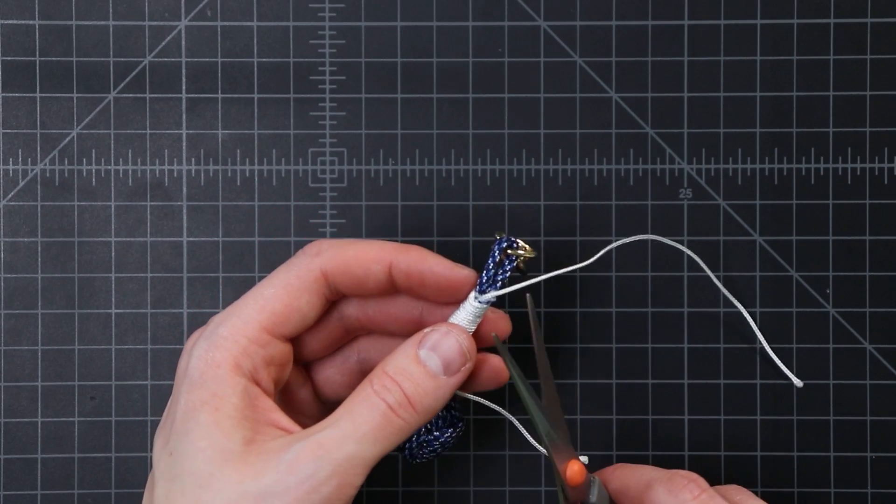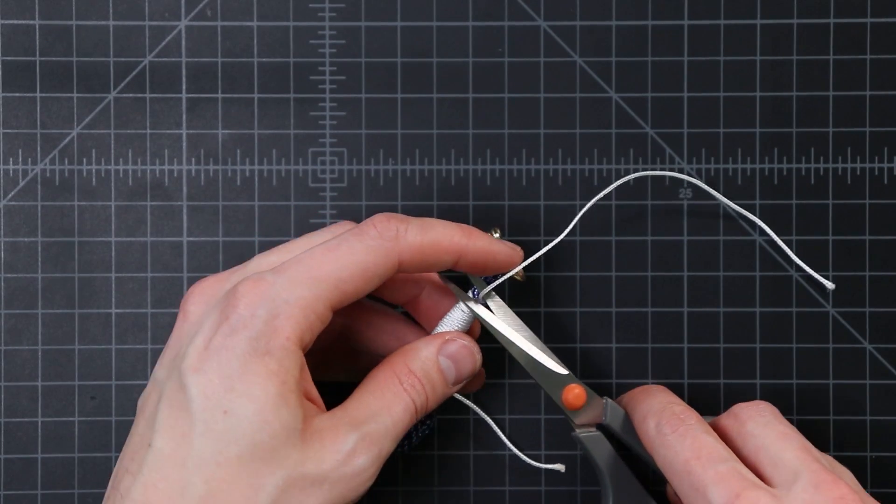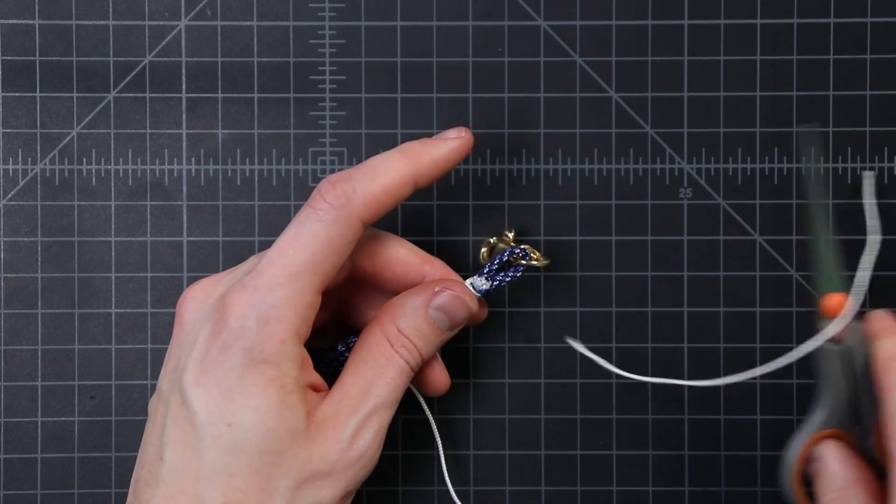All right, now we can go ahead and cut the end of our cords. Leave just a little bit showing there to melt.